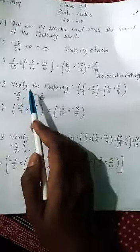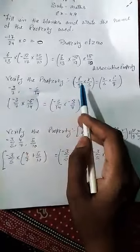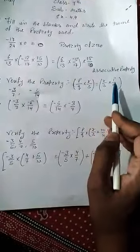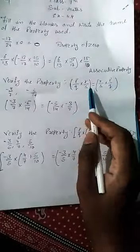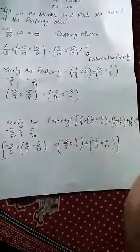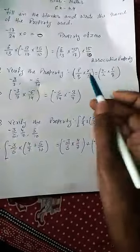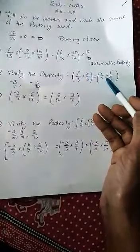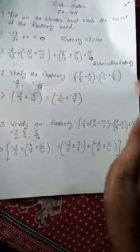Question number 2: Verify the property p by q multiply by r by s equals r by s multiply by p by q. We need to verify this property. What is the name of this property? It's the commutative property, which we also did in addition. But here we have multiplication.